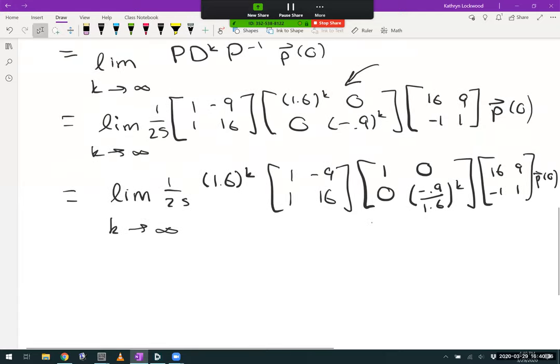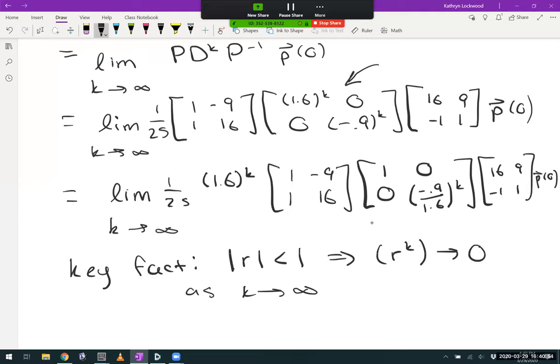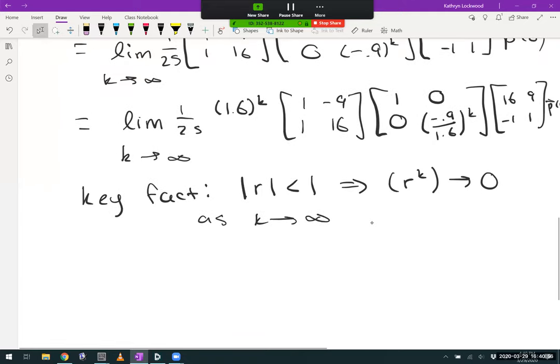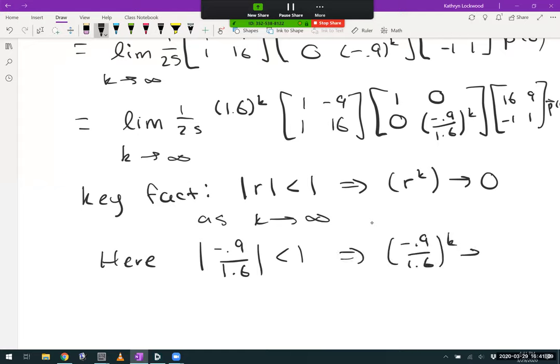Now, here's the key fact. If you have a real number r, whose absolute value is strictly less than 1, then r to the k converges to 0 as we let k tend to infinity. Here, the absolute value of negative 0.9 over 1.6 is strictly smaller than 1. So our term negative 0.9 over 1.6 to the k will tend to 0 as k goes to infinity.